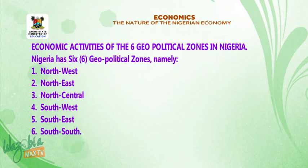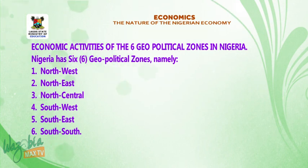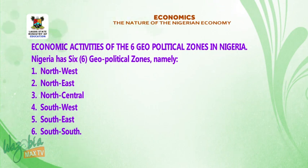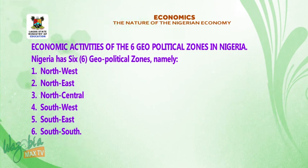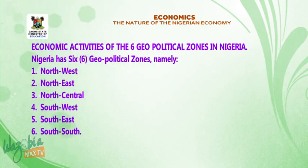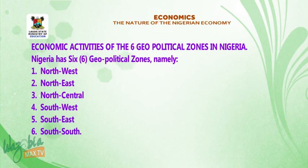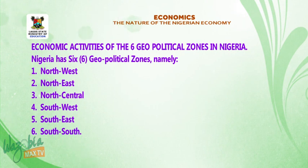Economic activities of the six geopolitical zones in Nigeria. Nigeria has six geopolitical zones, namely: 1. North-west. 2. North-east. 3. North-central. 4. South-west. 5. South-east. 6. South-south. Thank you for listening. When we come back after this short break, we shall consider the economic activities of the six geopolitical zones in Nigeria. Stay tuned.